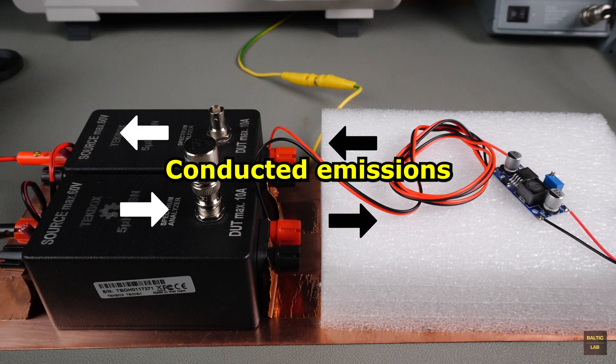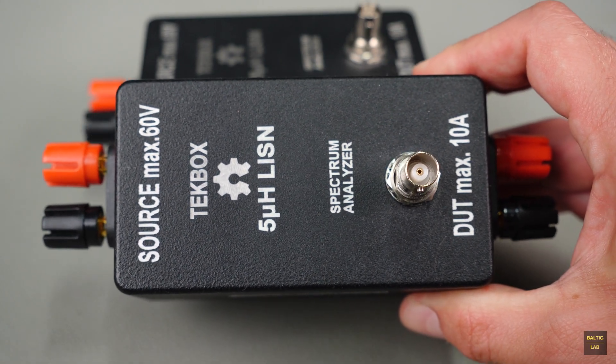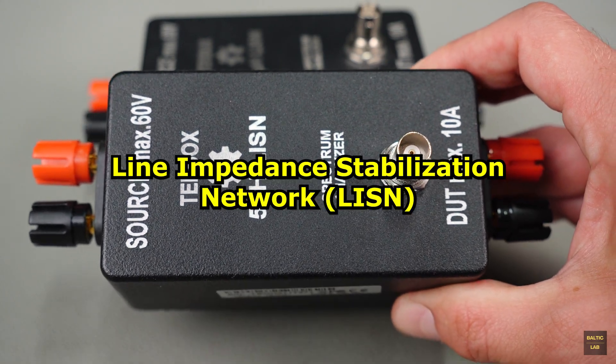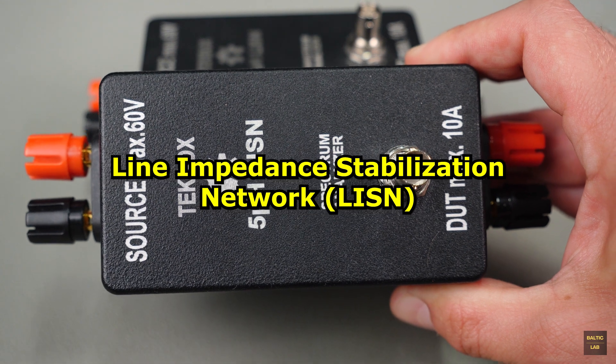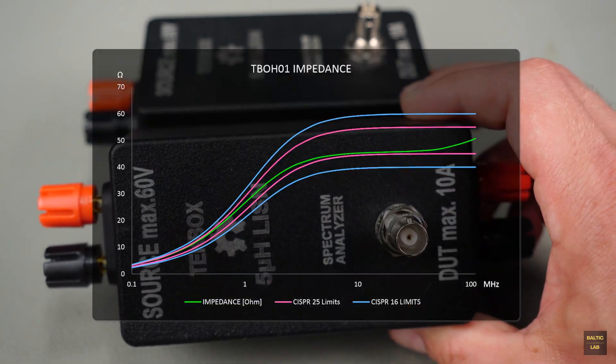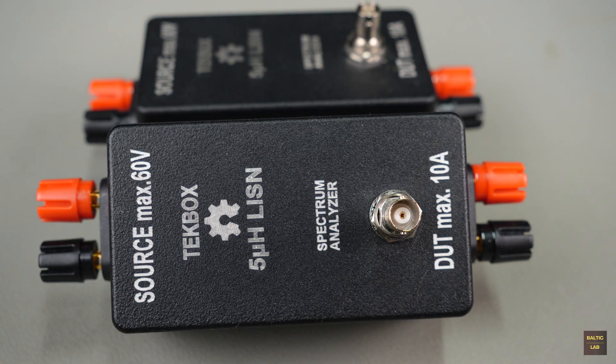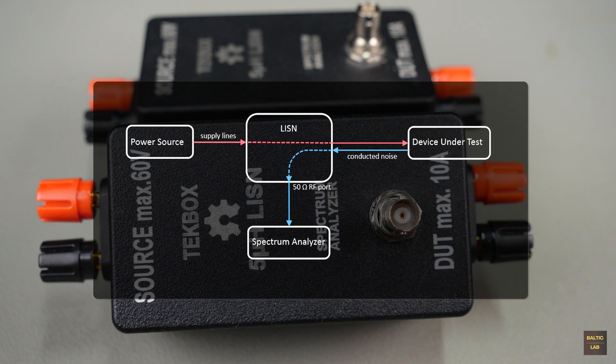To measure conducted emissions, we use a so-called LISEN, a Line Impedance Stabilization Network. A LISEN serves two main purposes. First, it provides a standardized impedance to the device under test. Second, it allows the extraction of interference signals so they can be analyzed using a measurement receiver or, in this case, a spectrum analyzer.